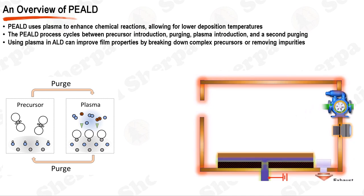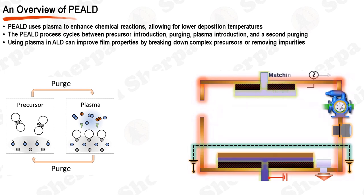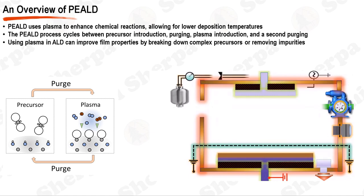Next, plasma is introduced — an ionized gas that typically contains reactive species, such as oxygen or nitrogen ions, depending on the type of film being deposited. These species react with the surface in a self-limiting manner. Once the plasma has had the chance to react with the surface, the system is purged again to remove any unreacted species and byproducts. This sequence of steps constitutes one PEALD cycle. By repeating these cycles, a film of the desired thickness can be uniformly deposited onto the substrate. The uniformity and precision of this process, combined with the ability to use a variety of precursors, makes PEALD a versatile tool for thin film deposition.